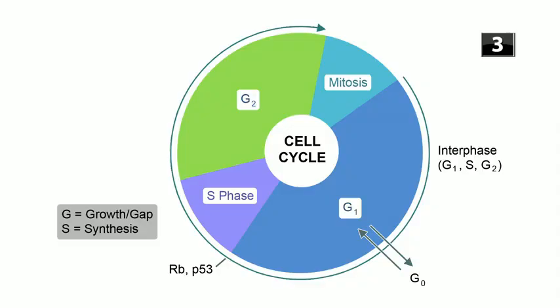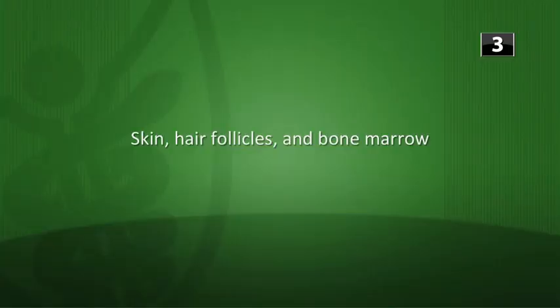The last question: which cell types are constantly regenerating themselves due to an absence of the G0 phase and a short G1 phase? A lot of cells go into a G0 phase and stop dividing unless stimulated, but certain cells need to regenerate rapidly and keep dividing, so they have no G0 phase and a very short G1 phase. These cells are found in the skin, the hair follicles, and the bone marrow. That's it for our warm-up.